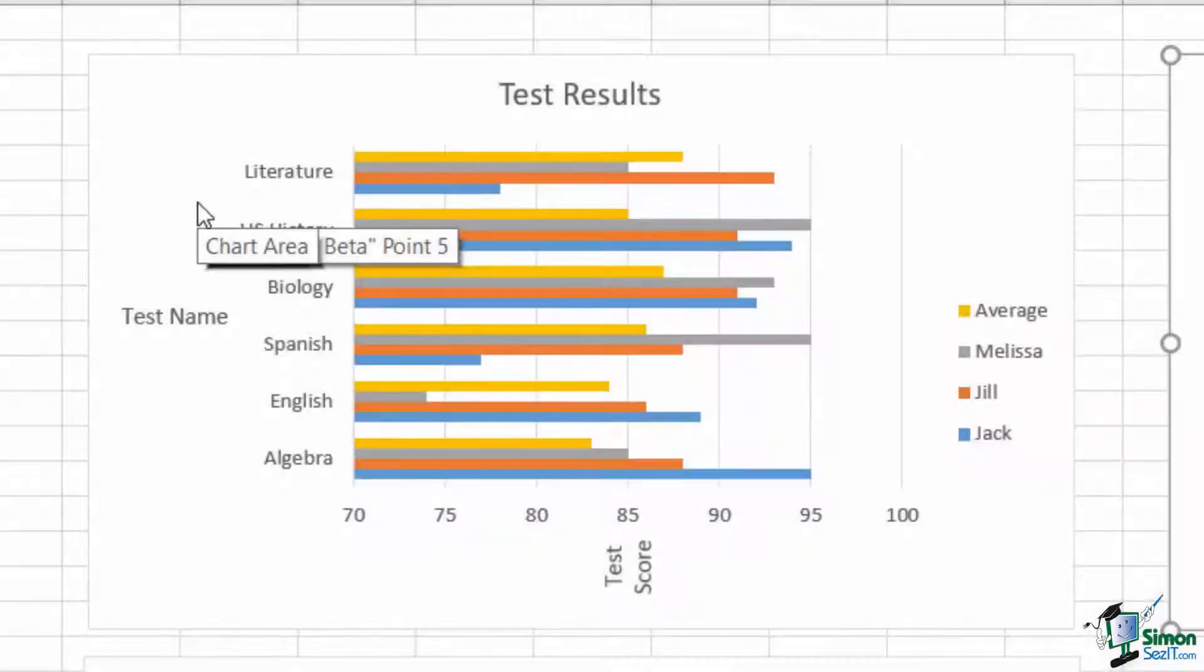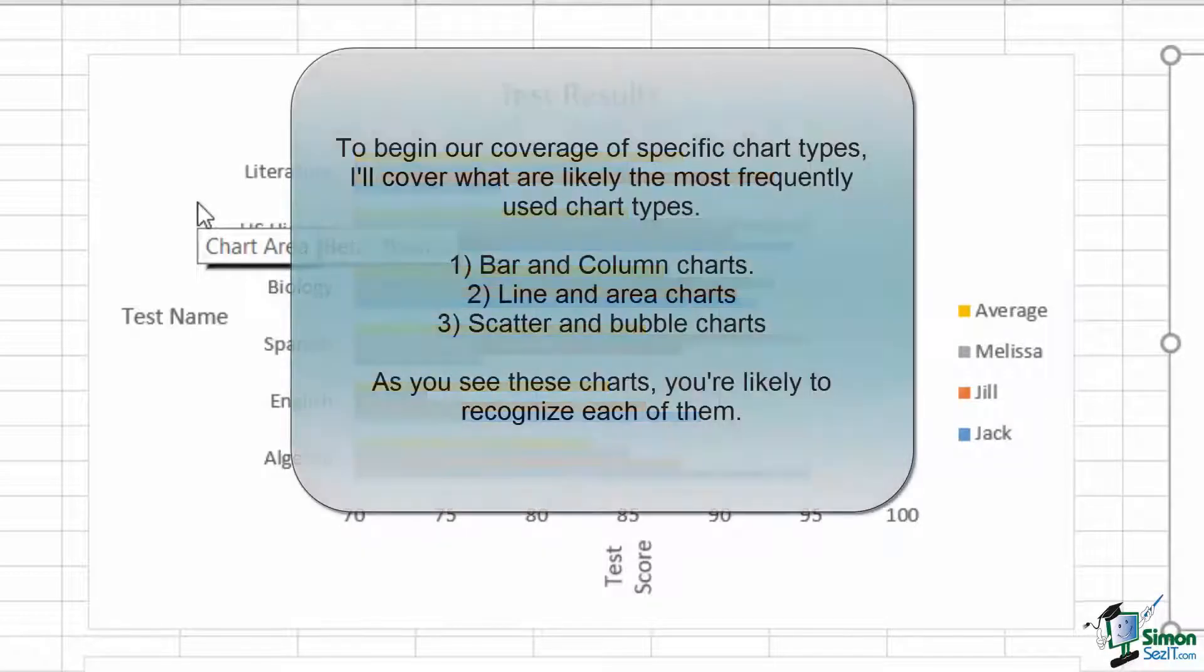The first group of charts we'll look at covers a fairly wide spectrum of what are probably the most commonly used set of charts. Line charts, bar charts, column charts, and scatter plots are probably the easiest charts to build and understand due to their relative simplicity and their common use even as early as elementary school. Each of these charts simply shows a data point at a specific point in relation to each axis.